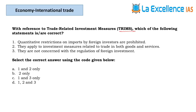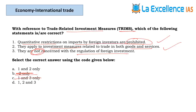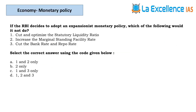The next question is about TRIMs — Trade Related Investment Measures. Statement 1 — quantitative restrictions on imports by foreign investors are prohibited; when opening the economy, all restrictions are removed, so statement 1 is right. Statement 2 — they apply to investment measures related to trade in both goods and services; all covered, so statement 2 is correct. Statement 3 — TRIMs are not concerned with regulation of foreign investment; obviously TRIMs do regulate foreign investment since it is trade-related investment measures. Statement 3 is wrong. Answer is A.